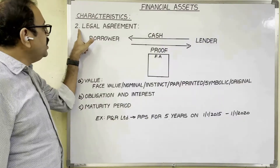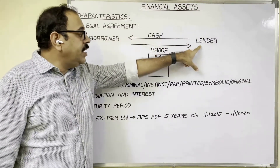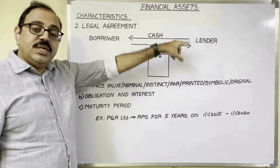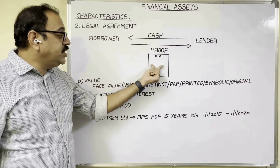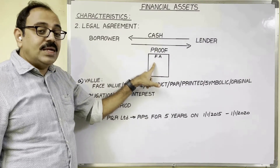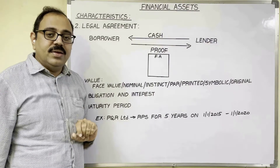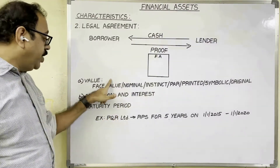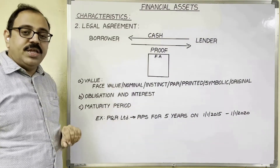The second feature is legal agreement. For example, a lender gave cash to a borrower. In return, the lender needs proof of repayment. The borrower issues a financial asset to the lender as proof. This financial asset acts as a legal agreement between the borrower and lender, and contains value, obligation and interest, and maturity period.